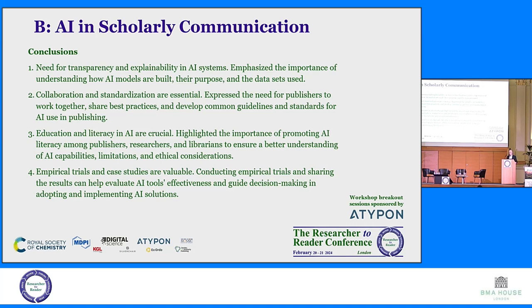The conclusions from a very active session were: the need for transparency and explainability in AI systems, emphasizing the importance of understanding how AI models are built, their purpose, and the datasets used. Collaboration and standardization are essential — publishers need to work together, share best practices, and develop common guidelines. Education and AI literacy are crucial for publishers, researchers, and librarians to understand AI capabilities, limitations, and ethical considerations.